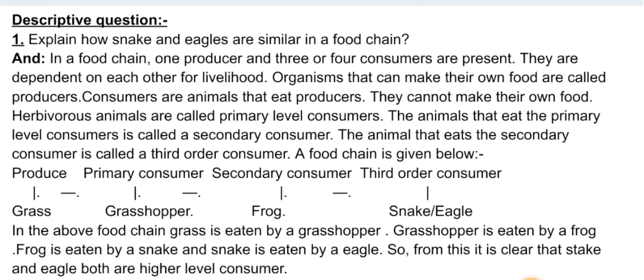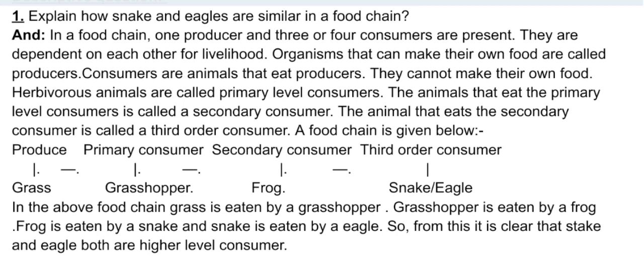Descriptive question one: explain how snake and eagle are similar in a food chain. In a food chain, one producer and three or four consumers are present. They are dependent on each other for livelihood. Organisms that can make their own food are called producers. Consumers are animals that eat producers; they cannot make their own food. Animals that eat plants are called primary level consumers. Animals that eat the primary consumer are called secondary consumers. The animal that eats the secondary consumer is called a third order consumer.